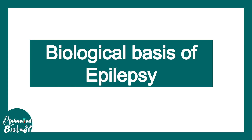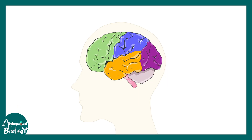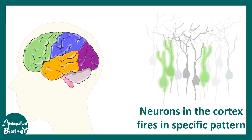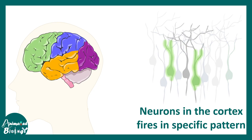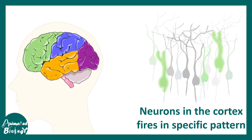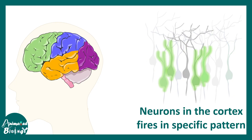Now let's understand the biological basis of epilepsy. Here is our brain, and in the brain the neuronal circuitry is functioning in a specific pattern. All of the neurons are not firing at once; they fire in a rhythmic fashion, which is important for information encoding, cognitive processing, and so on. This periodicity is disrupted in epilepsy.